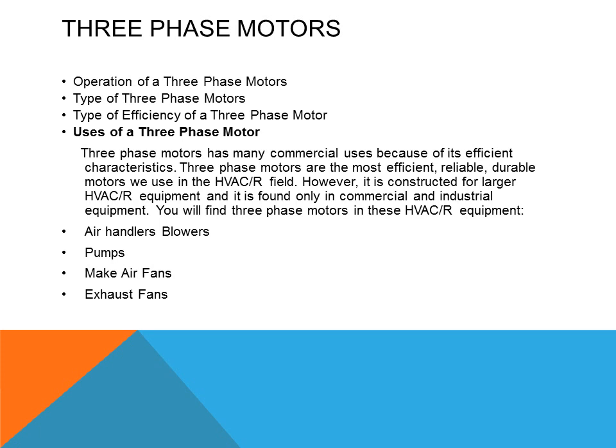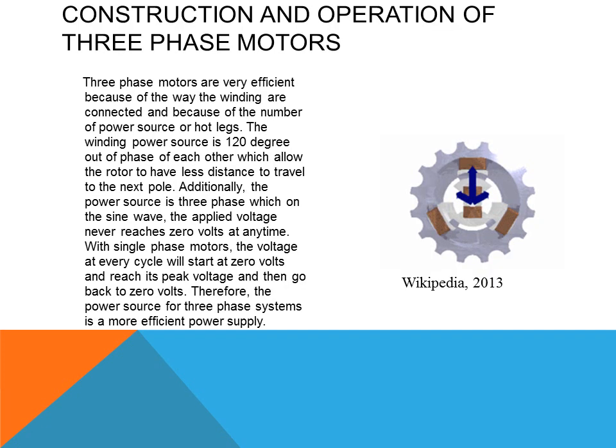Three-phase motors have many commercial uses because of their efficiency characteristics. They are the most efficient, reliable, and durable motors used in the HVAC field, constructed for larger HVAC refrigeration equipment found only in commercial and industrial settings. You will find three-phase motors in air handler blowers, pumps, makeup air fans, and exhaust fans. Three-phase motors are very efficient because of the way the windings are connected and the number of power source hot legs they have. The winding power source is 120 degrees out of phase with each other, which allows the rotor to have less distance to travel to the next pole, giving it additional torque and strength.